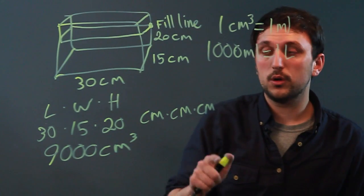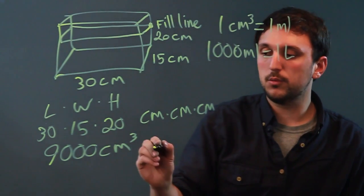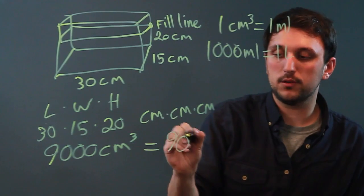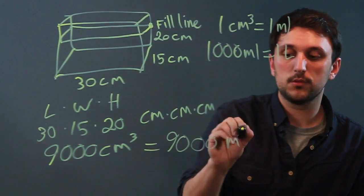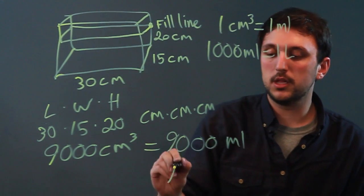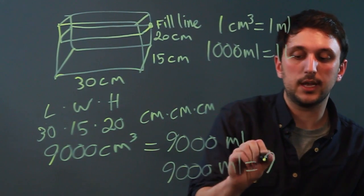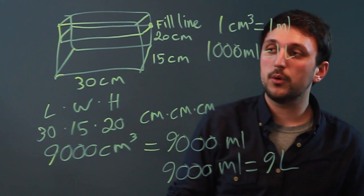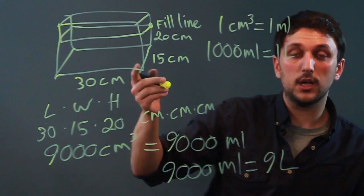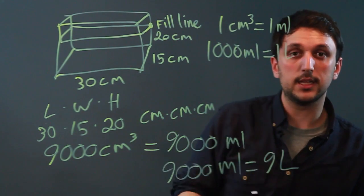So 9,000 centimeters cubed, well that equals 9,000 milliliters. And 9,000 milliliters equals 9 liters. So the volume of this fish tank of the water in the fish tank is 9 liters.